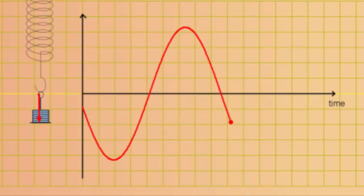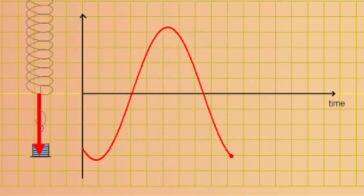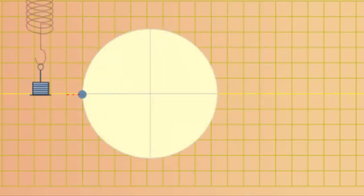When we look at the displacement of the mass as it oscillates, we see that it traces out what looks like a sinusoidal wave as a function of time. This similarity can be visualized when we compare the motion of the oscillating mass with the motion of an object in circular motion.